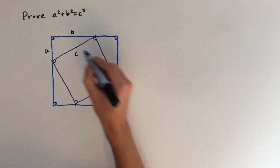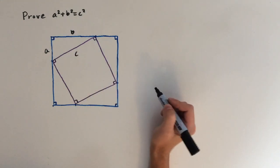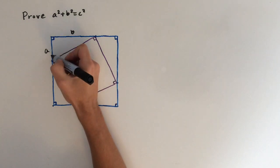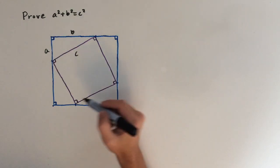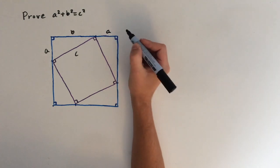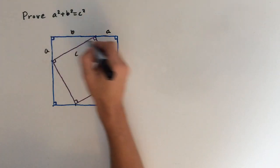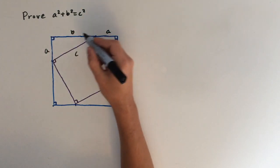So now we're going to set up an equation relating all the areas inside the square. Now we know that the short side of the triangle is A, and all of these triangles are identical, which means that this side length here is also going to be A. So the total length of this side is going to be A plus B.